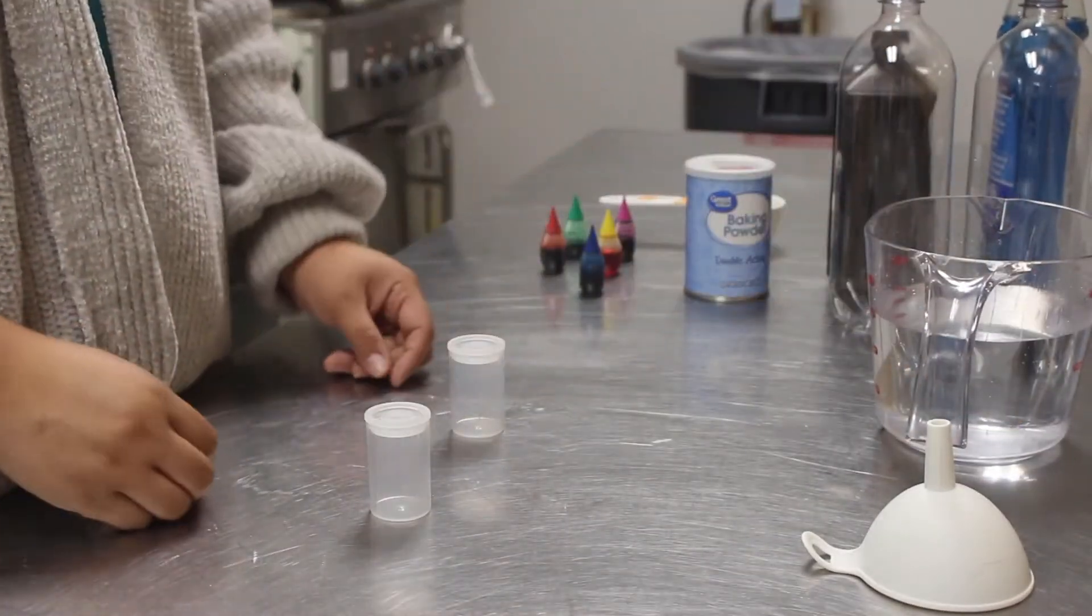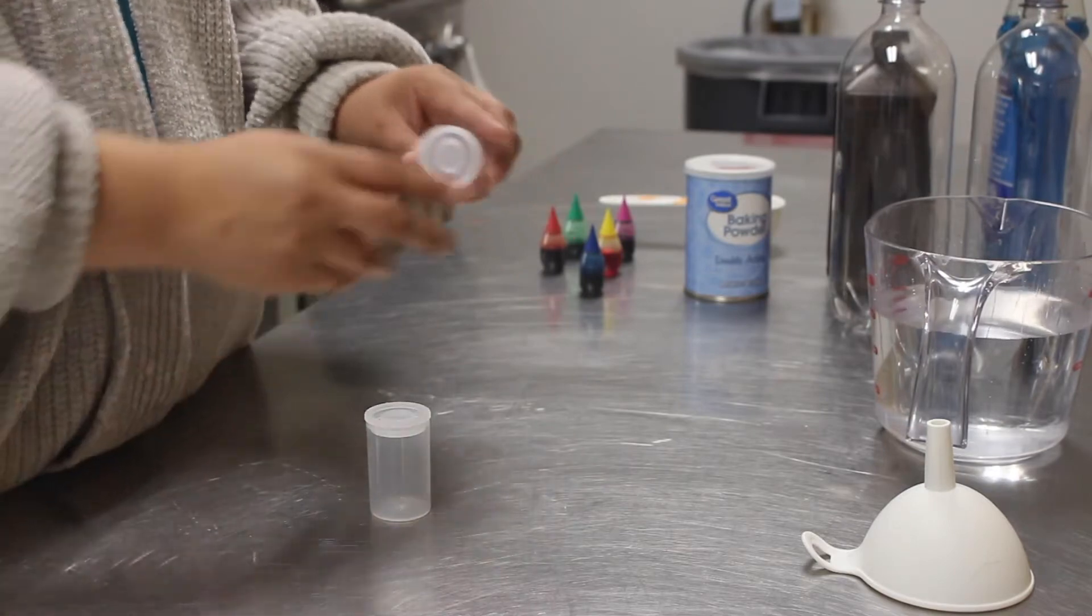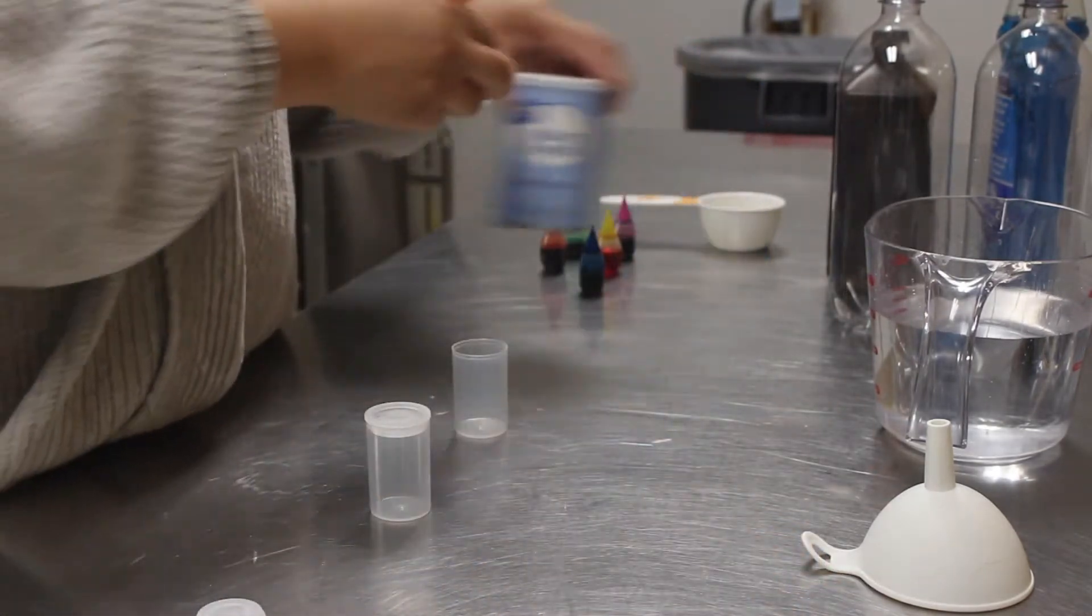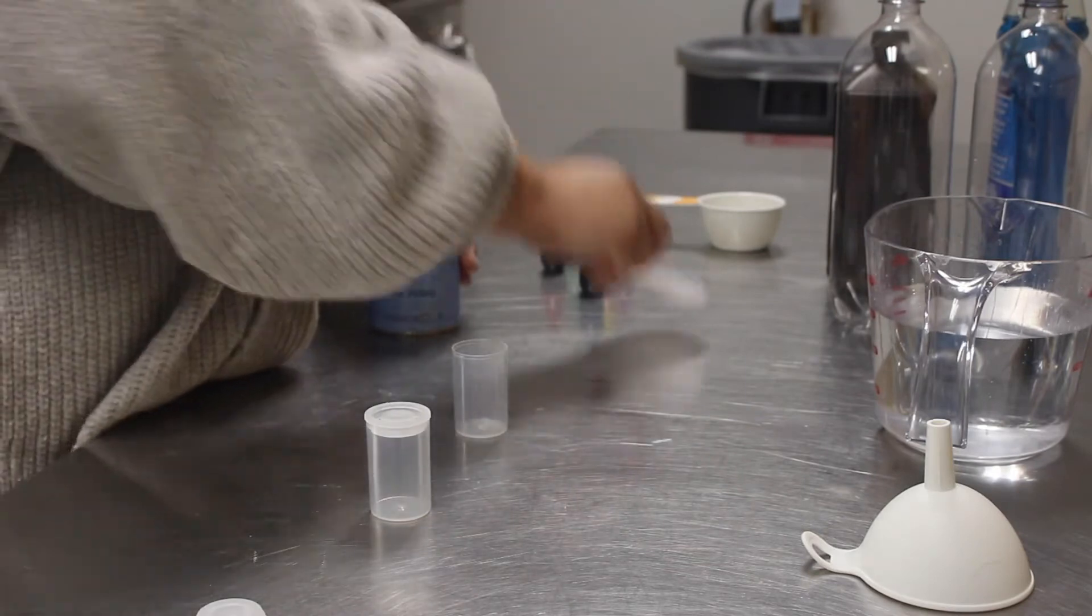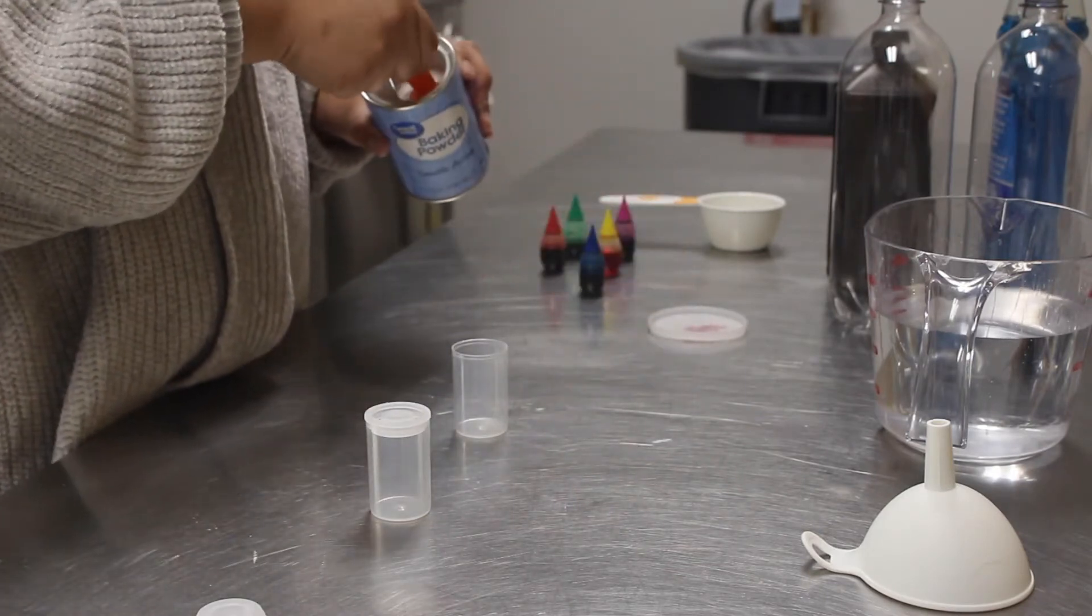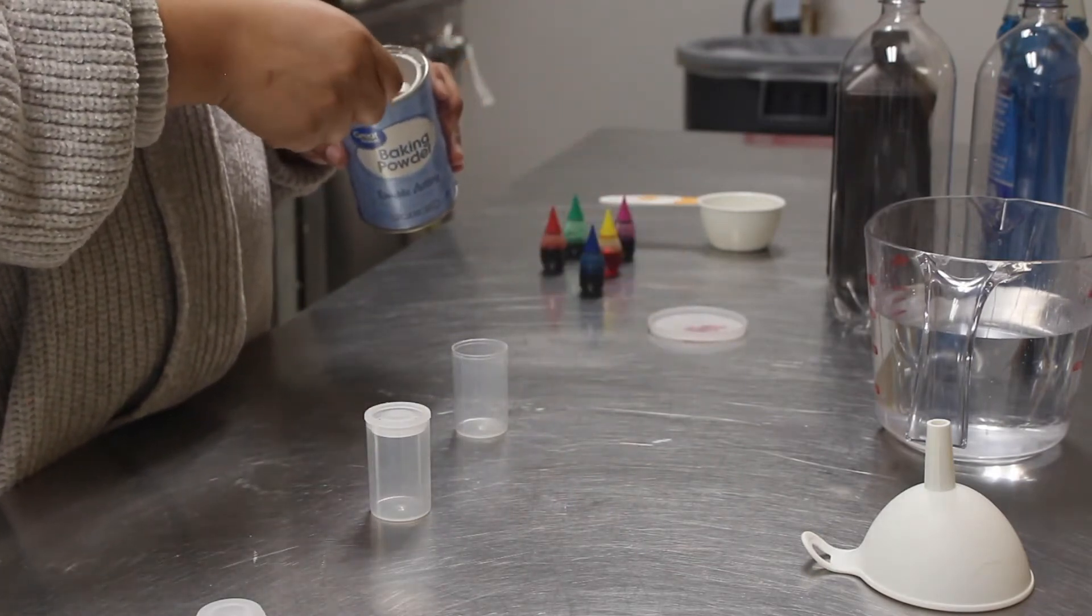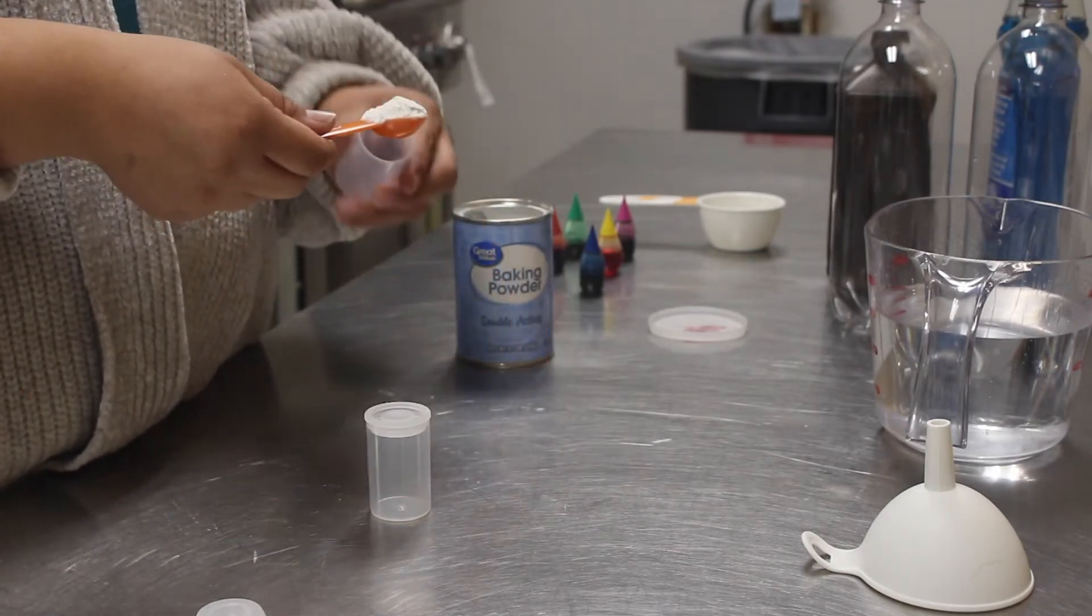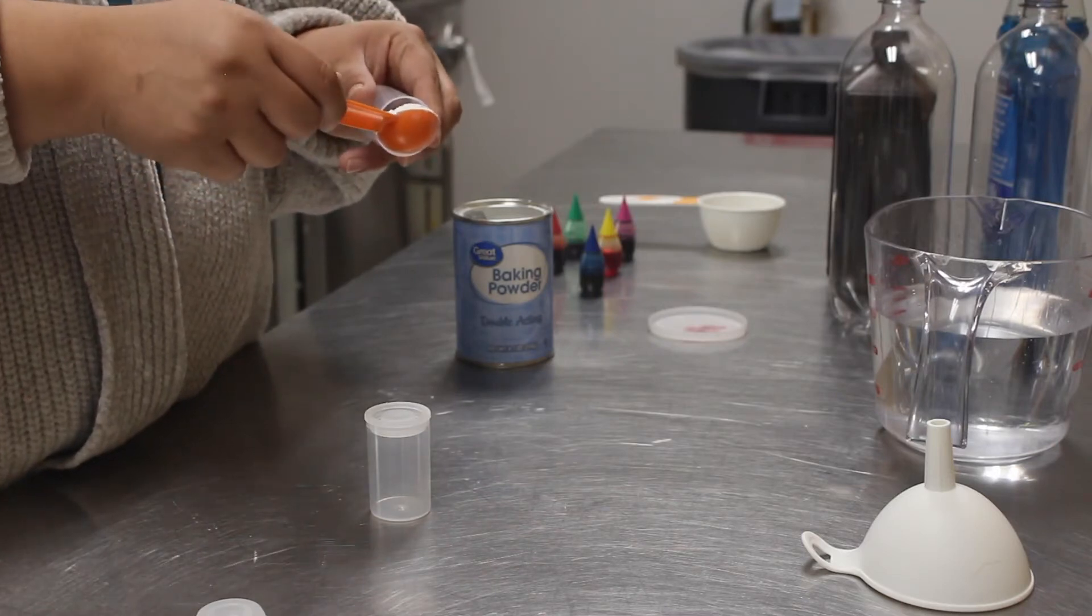And then you're gonna take your first film canister and you're gonna fill that one up with a teaspoon of baking powder. It's a heaping teaspoon so it doesn't need to be scraped off the edge.